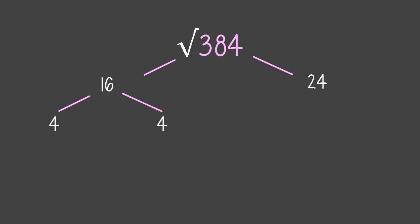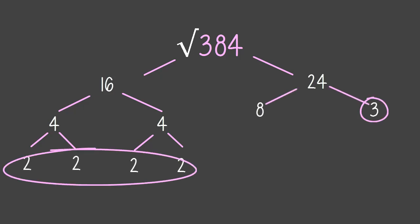First, 384 is separated into 16 and 24. 16 reduces into 4 and 4, which both reduce to 2 and 2. 24 reduces into 8 and 3. 8 reduces into 4 and 2, and 4 reduces into 2 and 2.